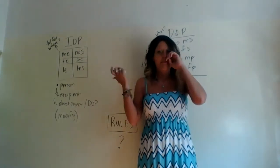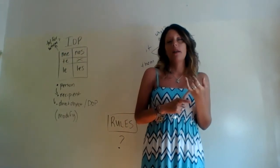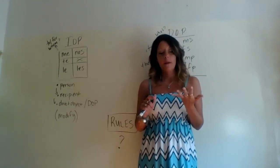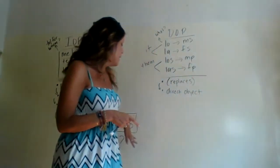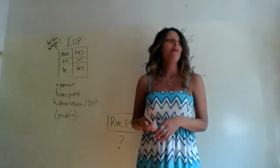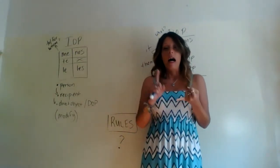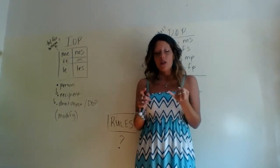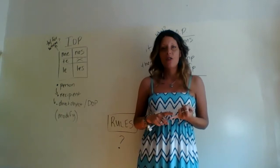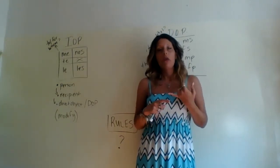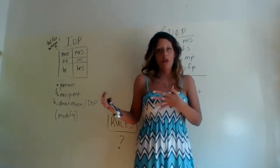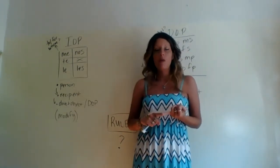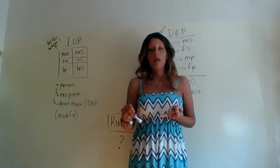Rule number one about placement: object pronouns are always attached to the end of affirmative commands. When we say 'affirmative command,' we mean a 'do it' kind of thing — not a 'don't do it.' A 'don't do it' would be a negative command. So rule number one: object pronouns — both IOPs and DOPs — are always attached to the end of affirmative commands.